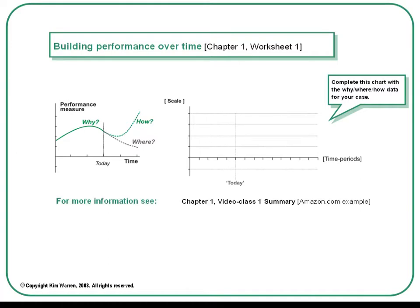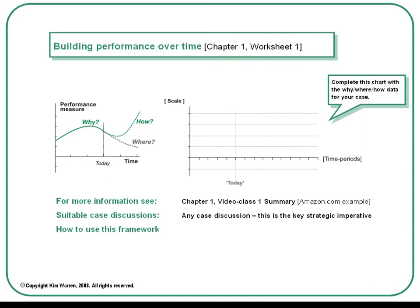You'll find more information on this in Chapter 1 and in the video class summary that goes with that chapter. The book uses the financial results of Amazon.com as an illustrative example. You'll find this chart is suitable for pretty well any case discussion — this is the key strategic imperative for the management team in just about every organisation. The way to use this framework is to ask the class to help you fill in the blank chart for the case they're discussing.